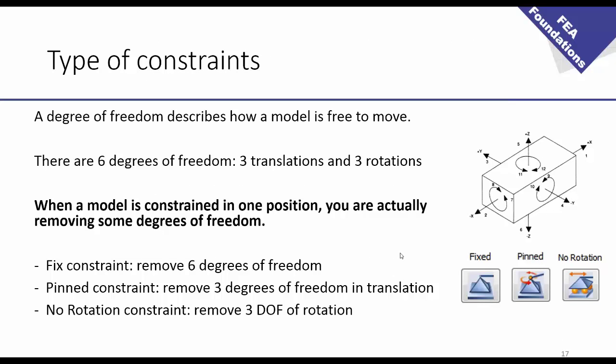You have different types of constraints. And to understand that, you have to know a very simple concept which is called the degree of freedom. So basically, the degree of freedom describes how a model is free to move in a 3D space. So, you know that model can move in 3D, because we have 3 spatial directions,